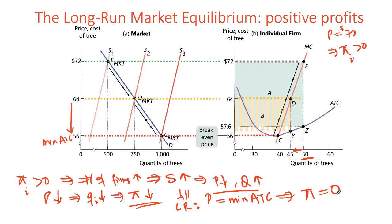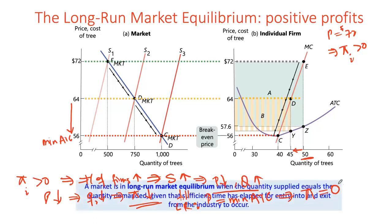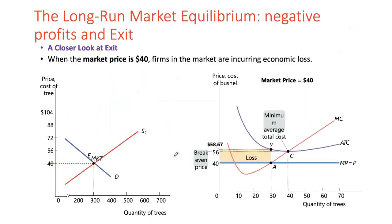So in the long run, if we started with positive economic profits, price will be driven down, industry output will be higher, incumbent firms' output will be lower than before, and their profits will be driven to zero. Assuming all firms have a similar cost structure, in the long run all firms will be earning zero economic profits. Now let's apply the same logic to a situation where a typical firm is actually earning losses at the market price.